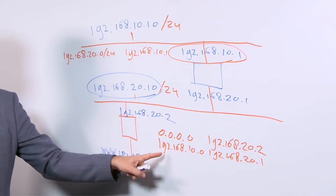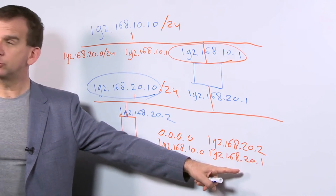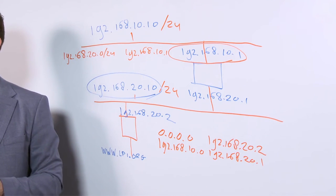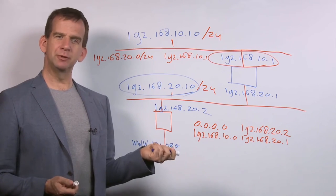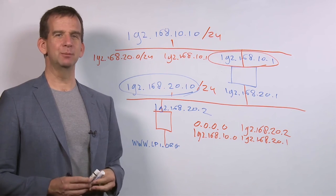And that would look like this. So for the network 192.168.10.0, we are going to route through 192.168.20.1. And this is giving you a little bit of an impression of how routing is working in networked environments.